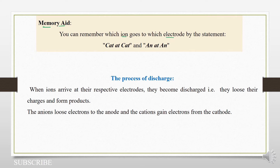But if you already know that the cathode is negatively charged, so a cation which is a positive ion will go there, it's good. But we can say: cat at cat, and an at an.